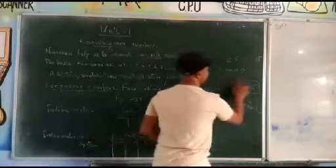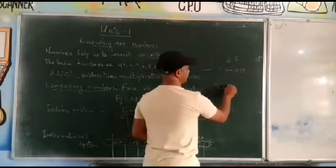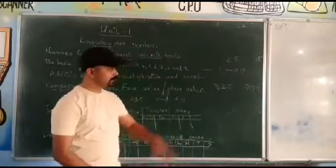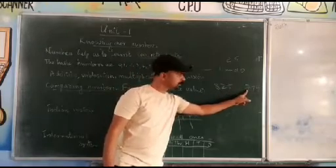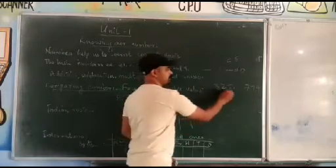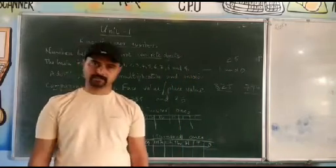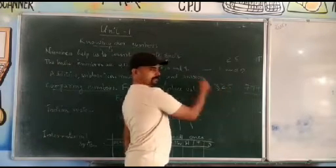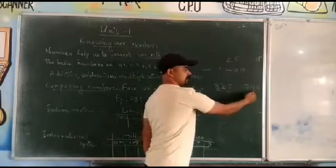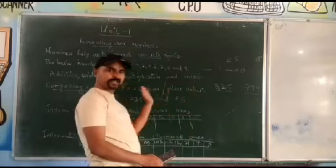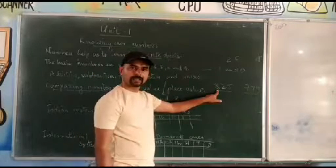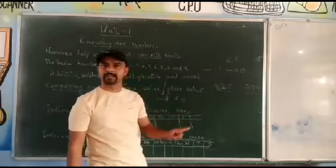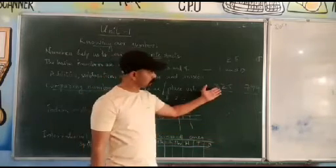Otherwise, if other numbers are given — let's look at 825 and 999. Here both have 3 digits. To compare them, check ones, tens, and hundreds places. Check the leftmost digit: 825 has 8 in the hundreds place, that is 800, and 999 has 9 in the hundreds place, that is 900. So 999 is greater — 900 is greater than 800.